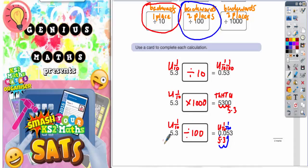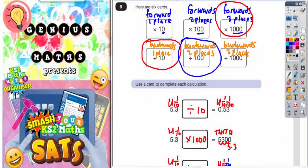As long as you know your column headings, you can work out how many places forwards or backwards each digit has moved. If it's moved forwards, you must be multiplying because you're making the number bigger. If it's moved backwards, you must be dividing because you're making the number smaller. The number of places it's moved is determined by